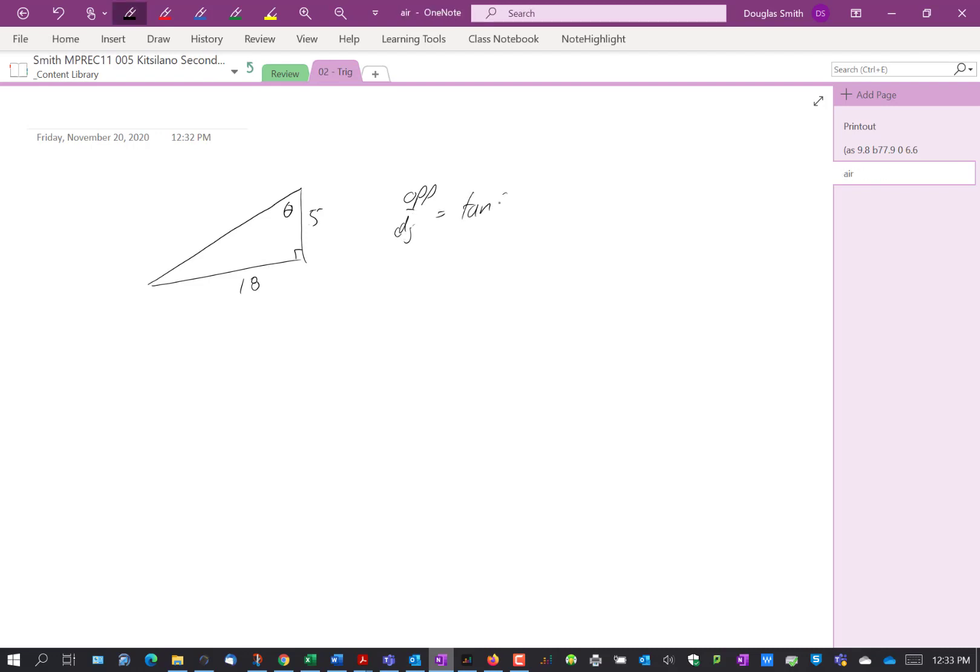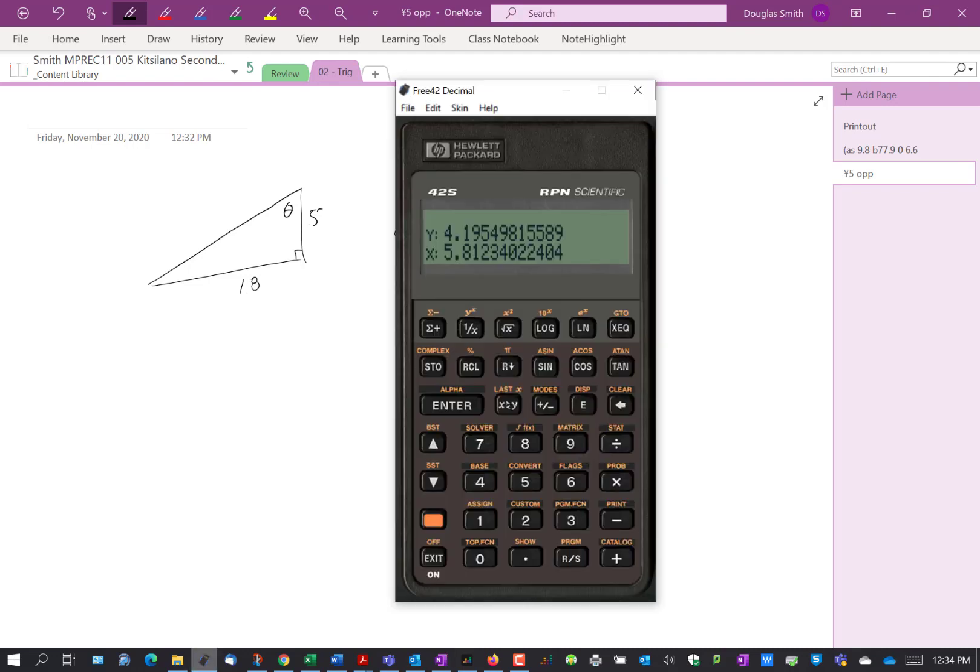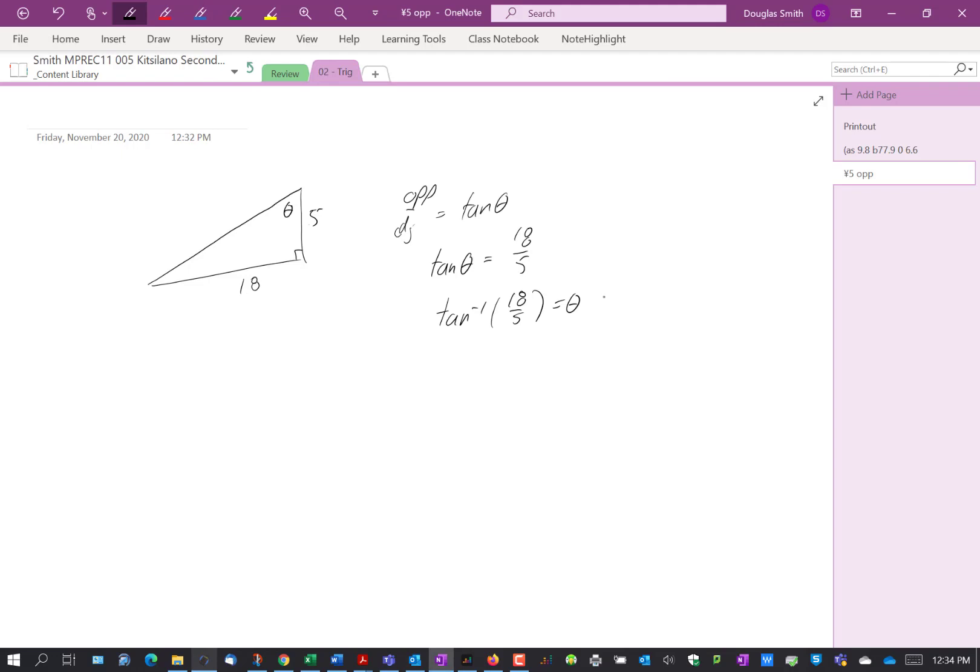So tan theta equals 18 over 5, and then to find the solution to this, we take the inverse function tan inverse of 18 over 5 to get the angle. So in this one it's 74.5 degrees.